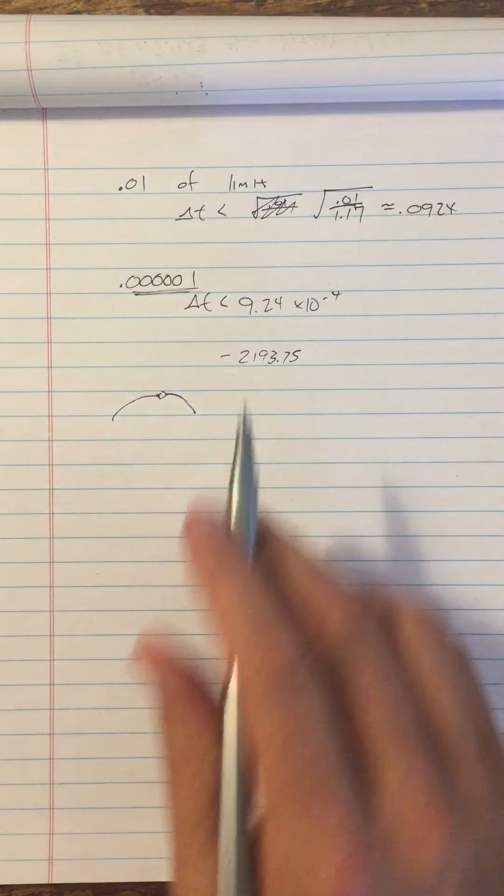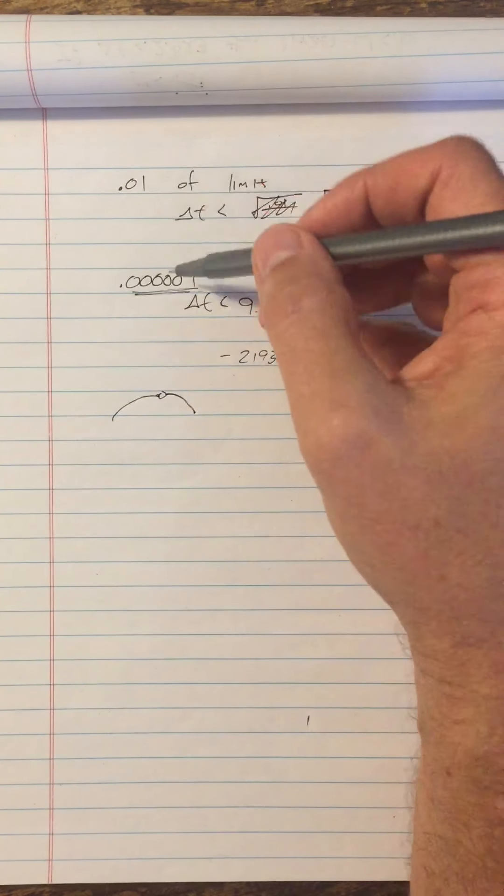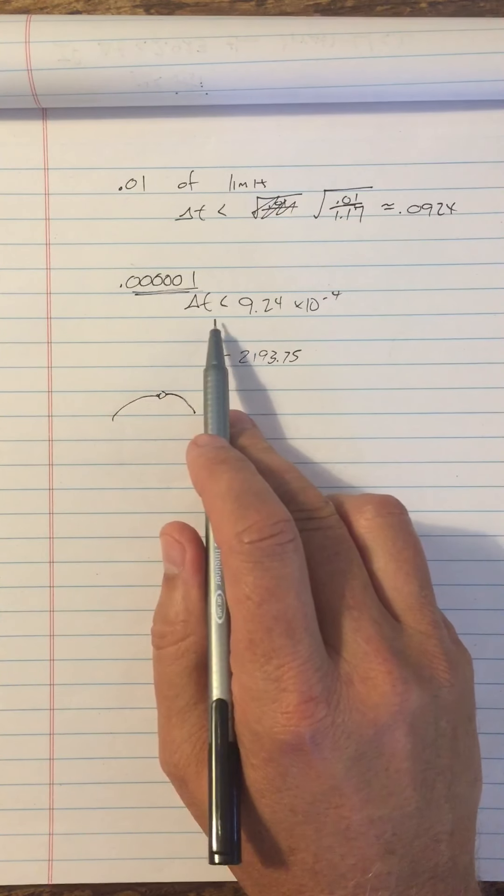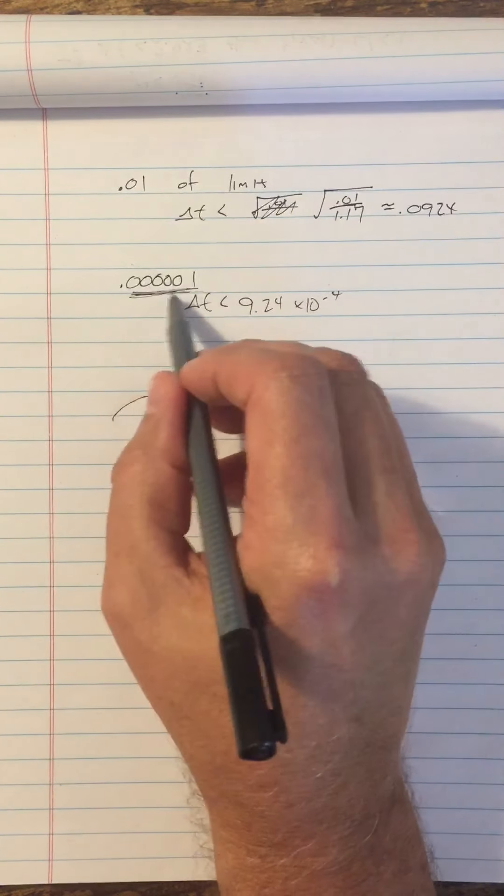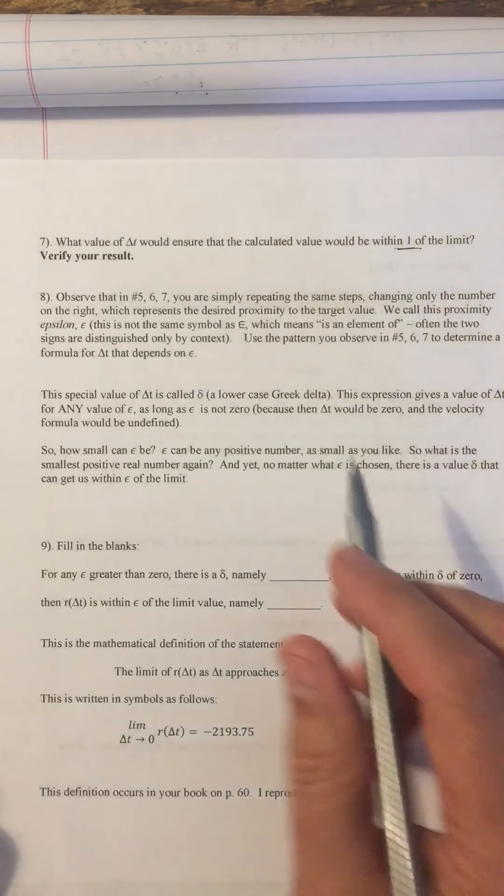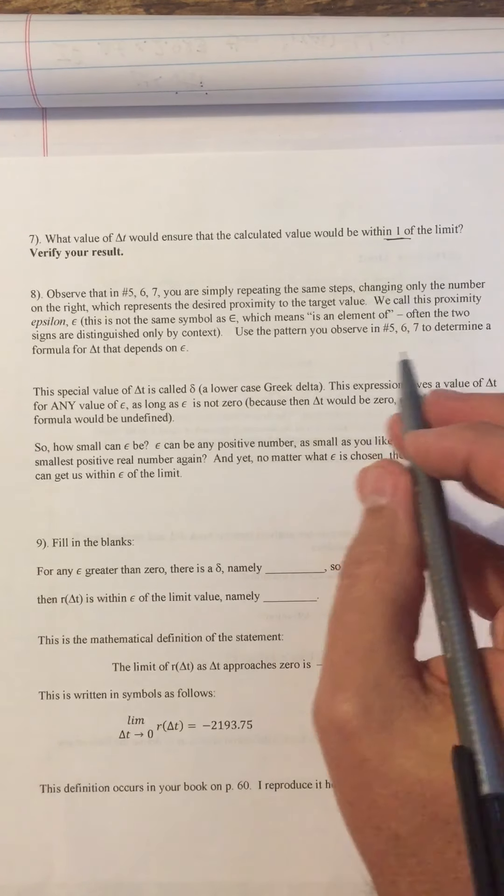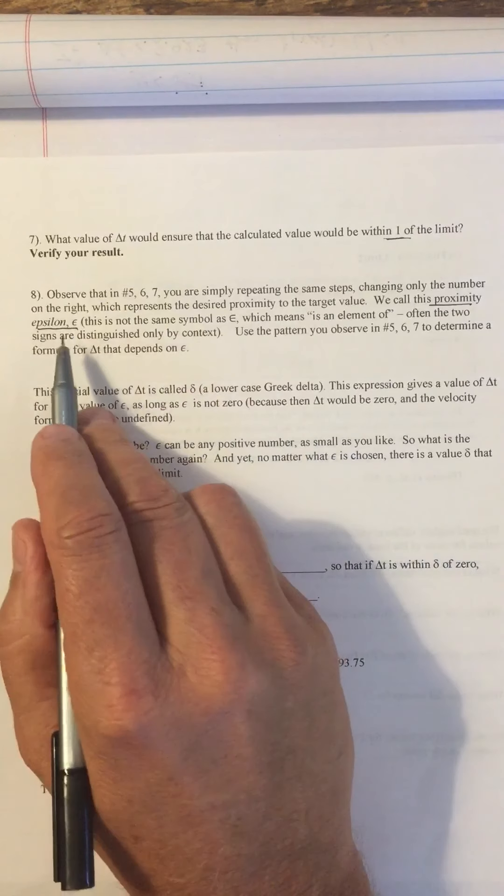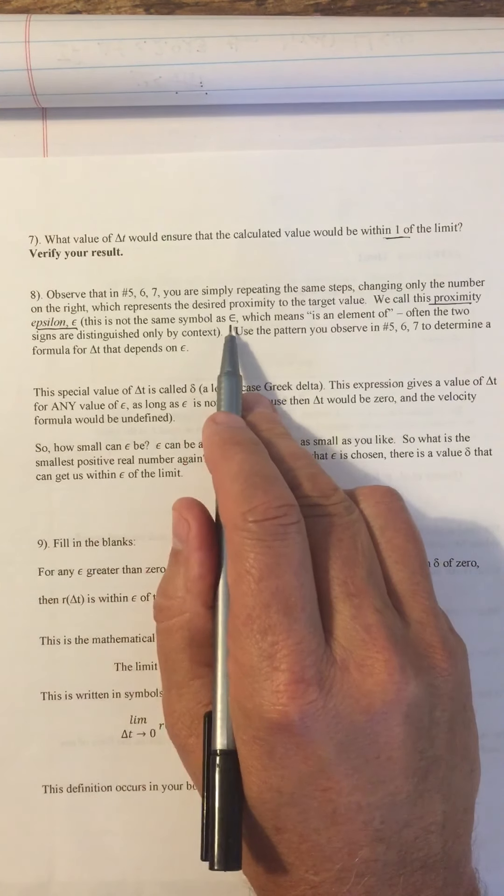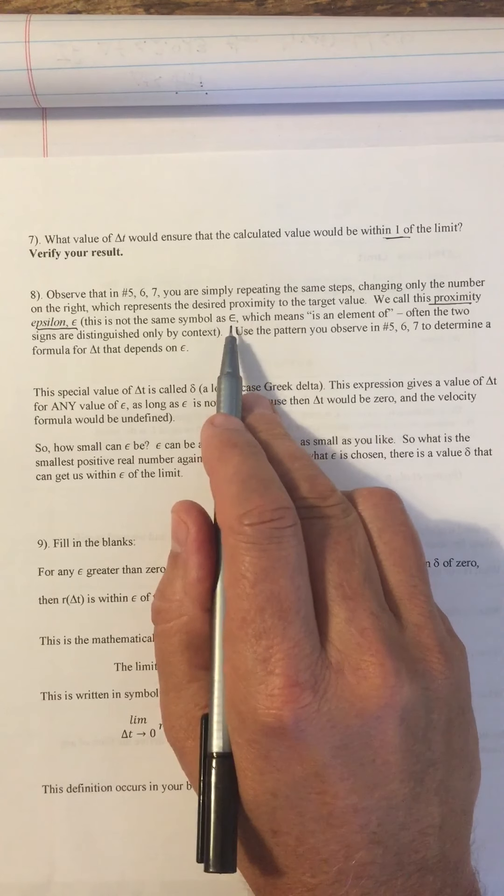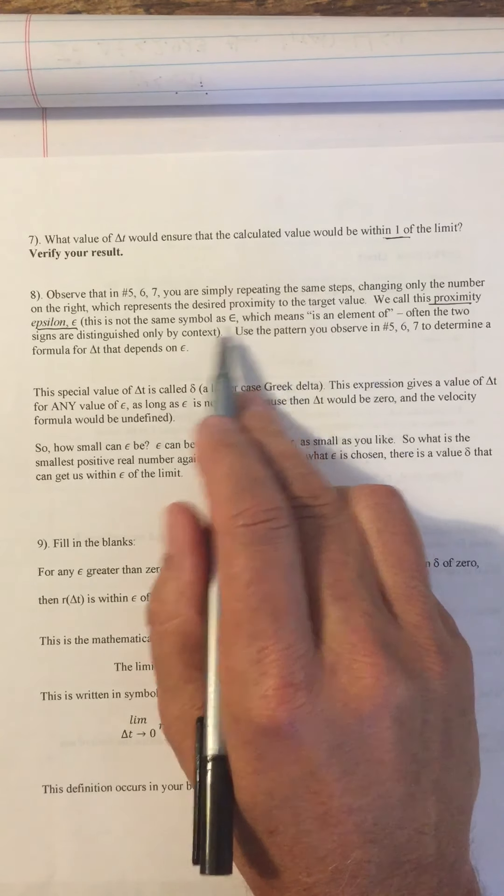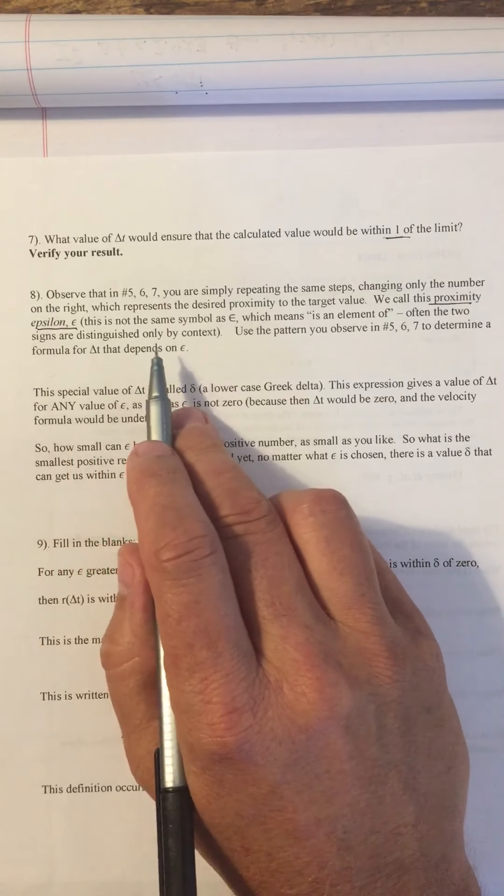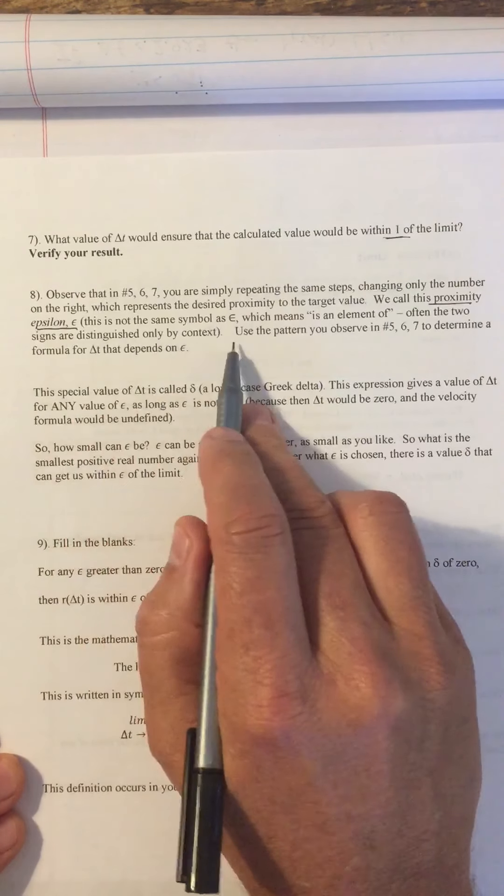All right. But this process, this is the idea. We can use smaller and smaller values of this proximity to the limit. So that proximity that we're talking about is called epsilon. So this is a Greek letter epsilon, not to be confused with is an element of, although, by the way, this symbol for is an element of comes from the Greek letter epsilon because epsilon is the first letter of the word element, but you distinguish them by context.